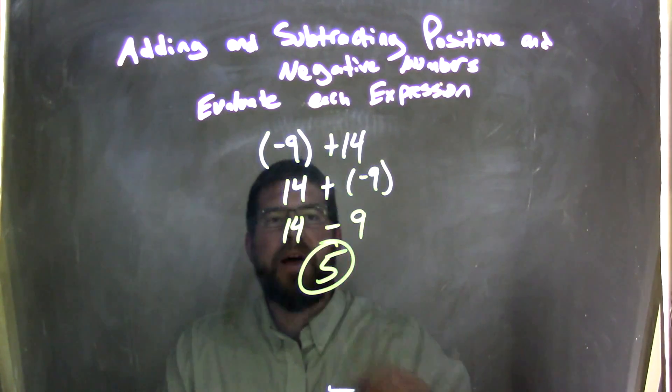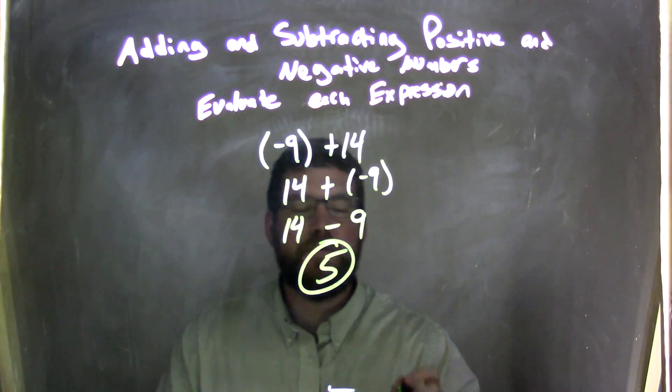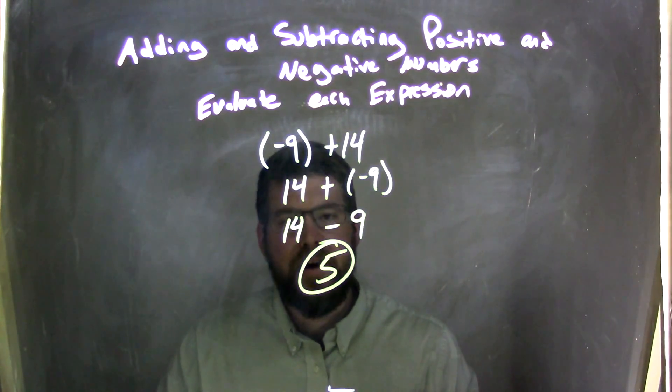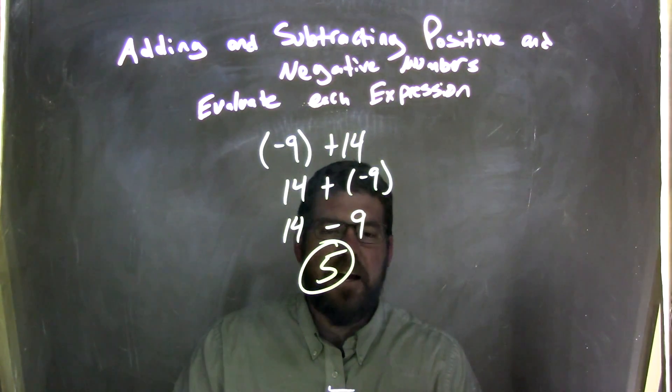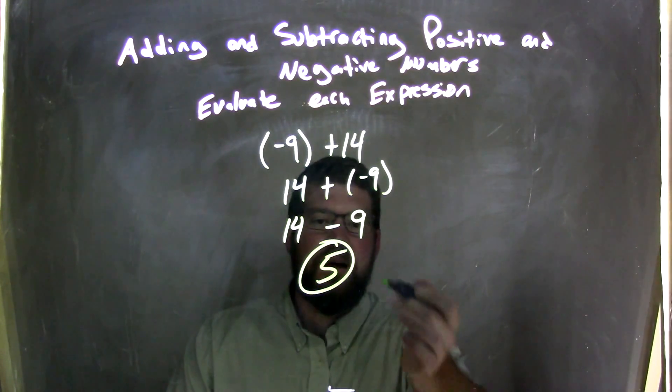So again, let's recap. We started with negative 9 plus 14. We used the commutative property to rearrange 14 and negative 9, so it's 14 plus negative 9. And then we know that adding a negative is the same thing as subtraction. So 14 minus 9, which comes out to be our answer, which is 5.